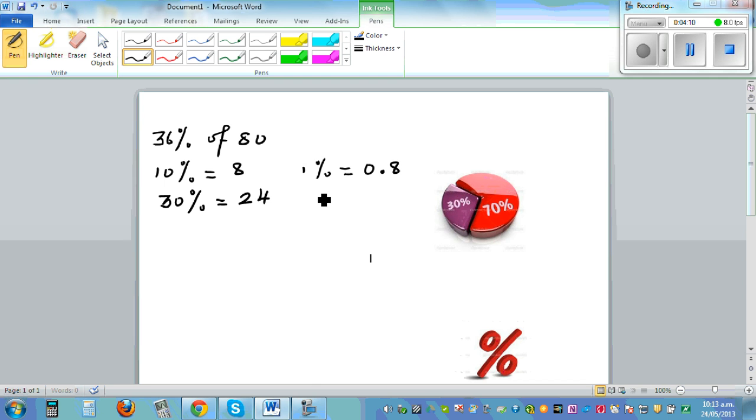So from this you can directly find 6% also. Let me go like this. So if you want to find 6%, from 1% you want to find 6%, this is 6 times of this. So 0.8 times 6, ignore the decimal point, so this is 48. And here you got one decimal place, you got 4.8.